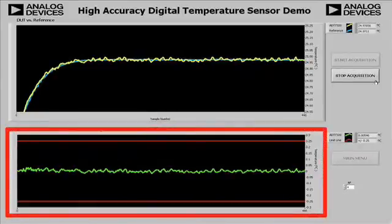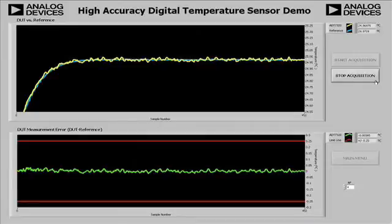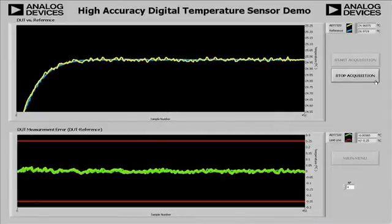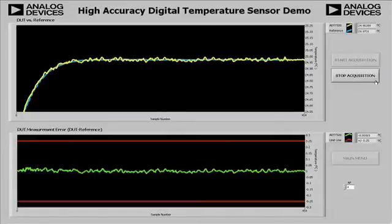The bottom chart shows the difference between the two measurements with the plus or minus 0.25 degree C temperature accuracy limits shown in red. As you can see, the difference in temperature measurements between the ADT-7320 and the reference is well within the 0.25 degrees C specification.